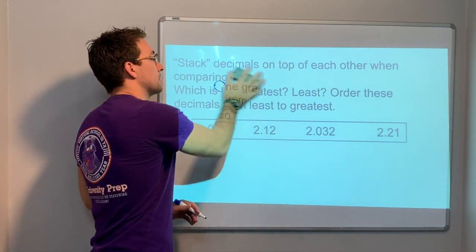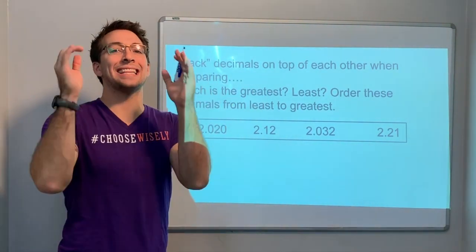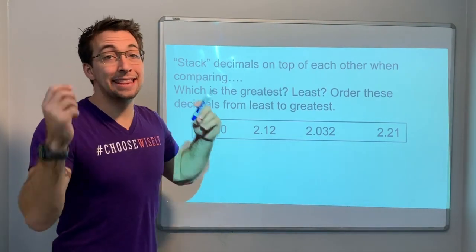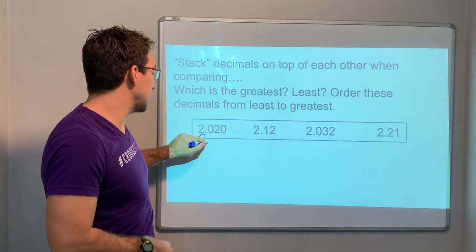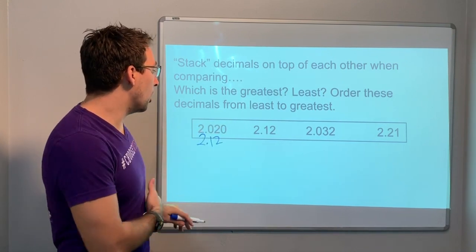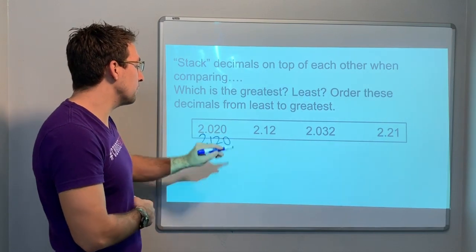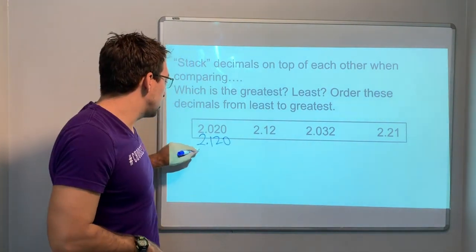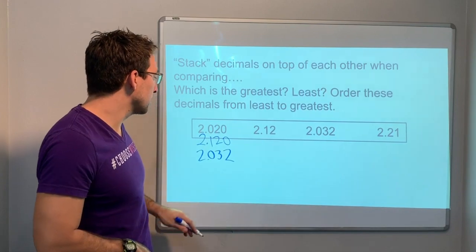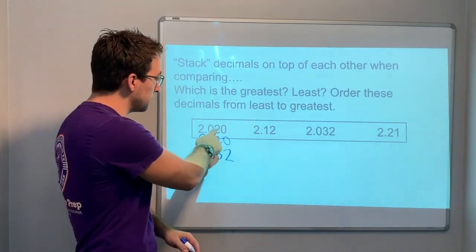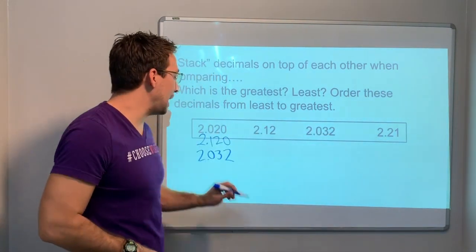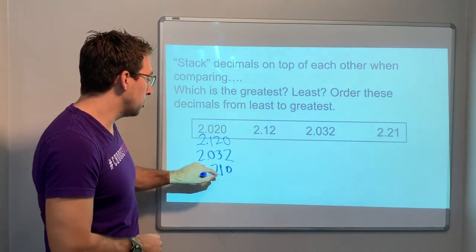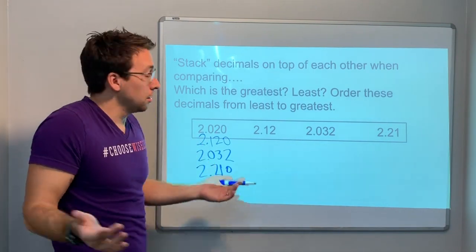You're going to get lists of decimals and you have to be able to put them in order from least to greatest. How do we do this? Stack the decimal — always stack the decimal. For example, two and twenty thousandths: stack them up. Two digits instead of three? Just add a zero. Is 20 bigger or is 120 bigger? 120 is bigger than 32, and 32 is bigger than 20.